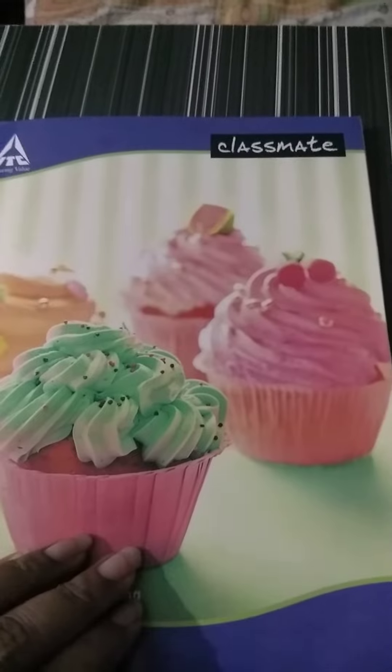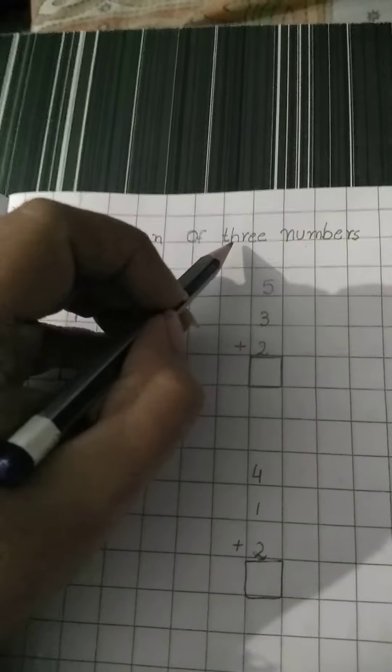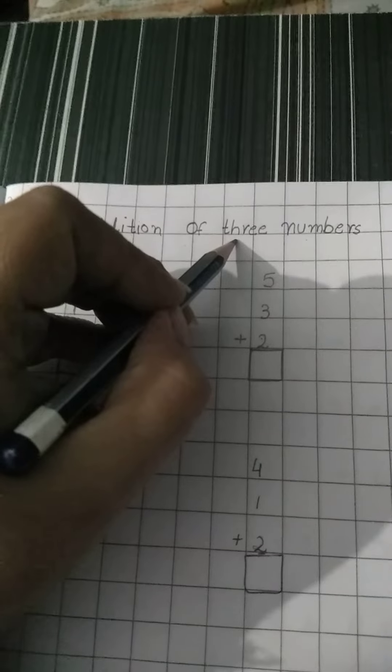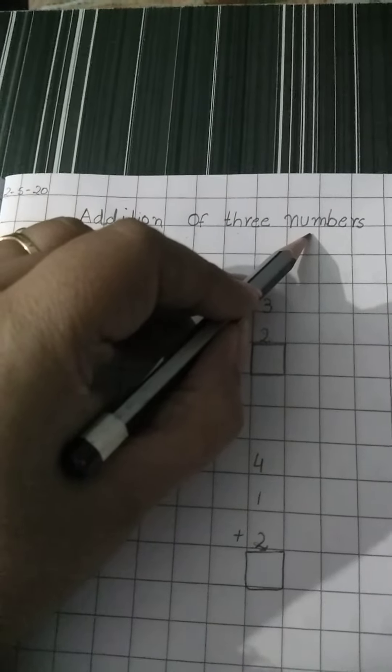So open your maths copies now. Now write today's date 2-5-20 edition, A-double-D-I-T-I-O-N edition of, O-F-O-F, 3-T-H-R-E-E-3 numbers, N-U-M-B-E-R-S numbers.